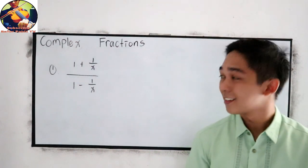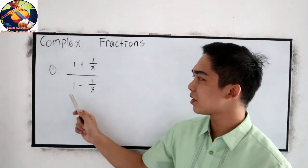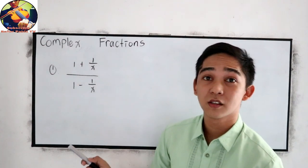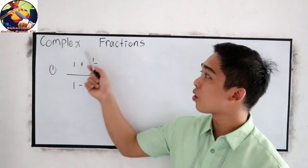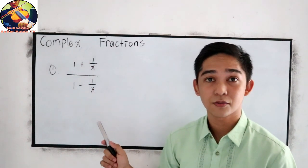Number 1, what if the given is 1 plus 1 over x all over 1 minus 1 over x? So this is a complex fraction. You notice that we have a lot of fractions, many fractions.